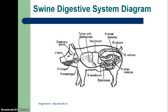This is a picture of a swine digestive system, and if you were to compare this to an example of a human digestive system you would see a lot of similarities. All the basic parts are there — the same size and shape — and they function very similarly to that of a human digestive system.